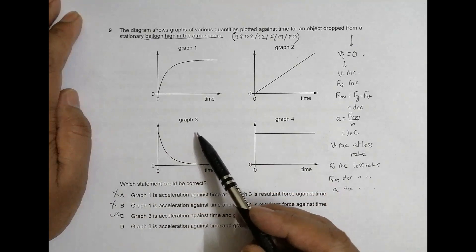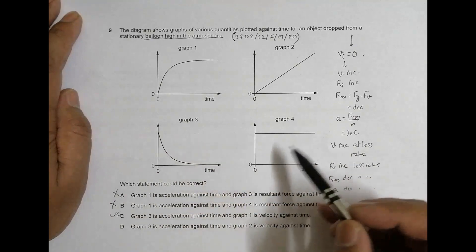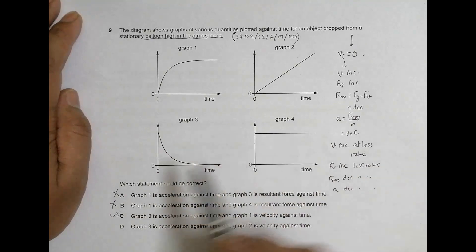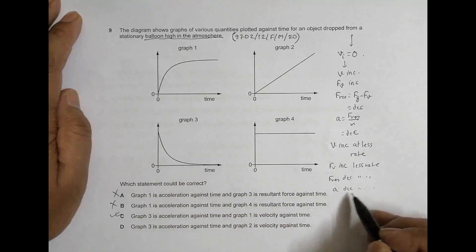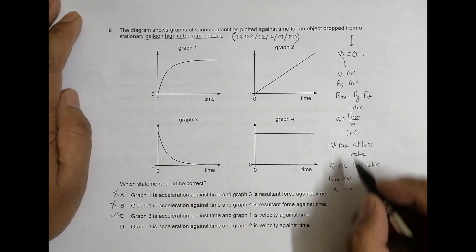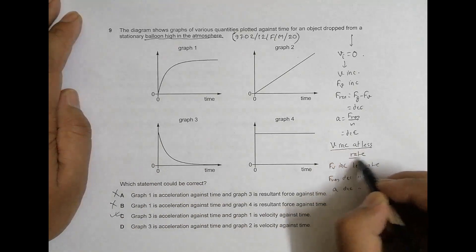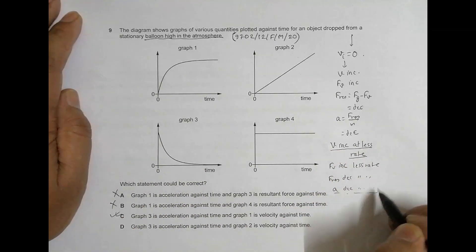So that means this a should decrease at less rate. So something decreasing at a lesser rate is shown only by graph 3. Decrease at a lesser rate is shown by graph 3.